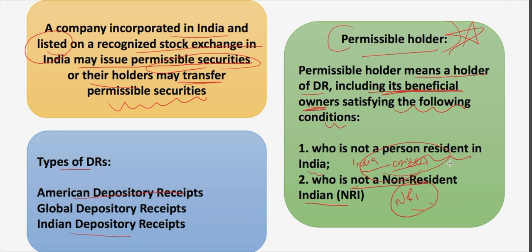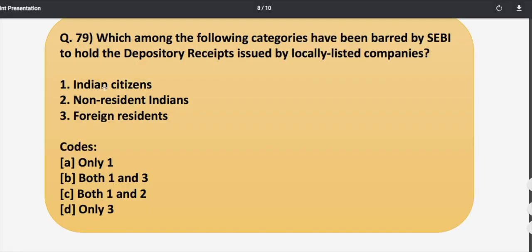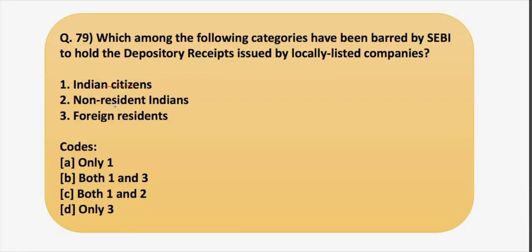Note that both Indian citizens and NRIs cannot be the holder as well as the beneficial owner of such depository receipts. So the answer is Indian citizens and NRIs — both option 1 and 2 — that is option C.